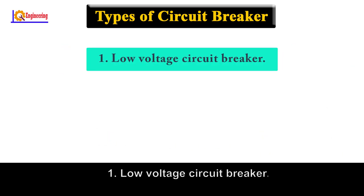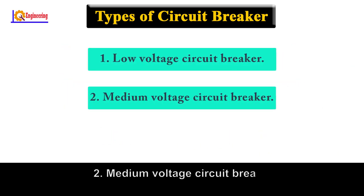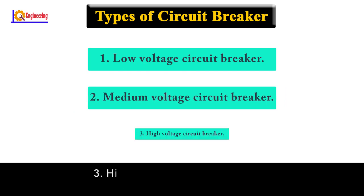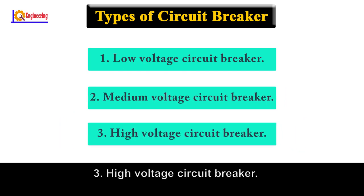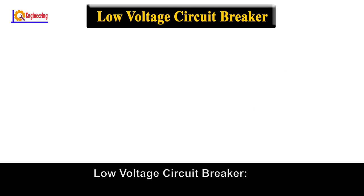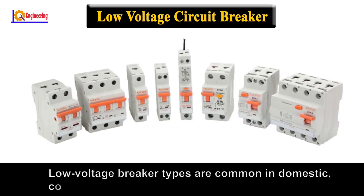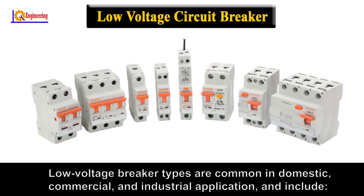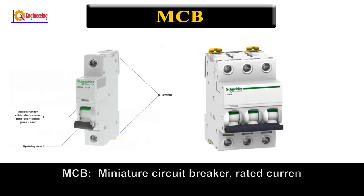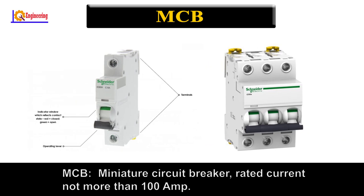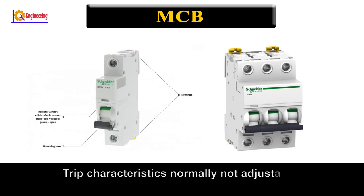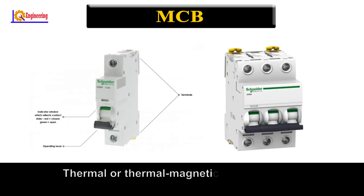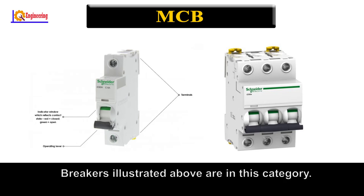Number one: Low voltage circuit breaker. Number two: Medium voltage circuit breaker. Number three: High voltage circuit breaker. Low voltage circuit breaker types are common in domestic, commercial, and industrial applications. MCB — Miniature Circuit Breaker: rated current not more than 100A, trip characteristics normally not adjustable, thermal or thermal-magnetic operation. Breakers illustrated above are in this category.